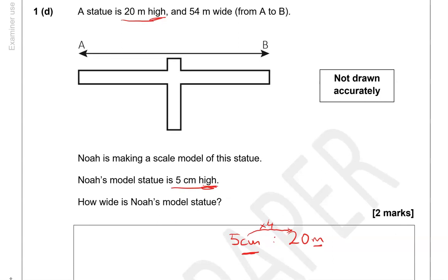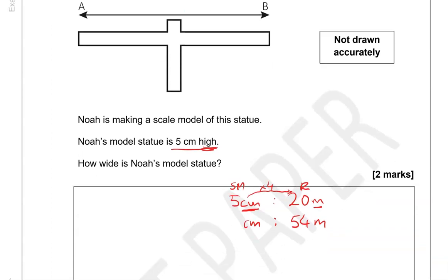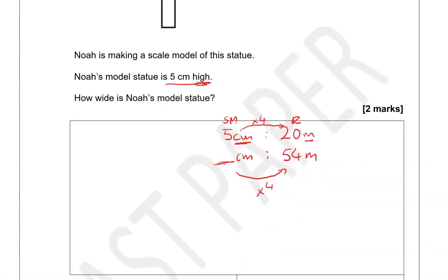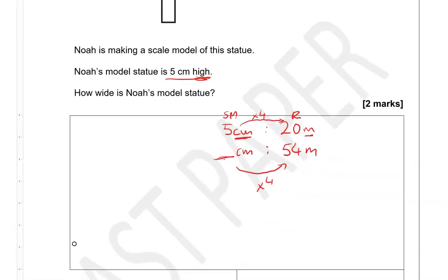So we've got the width in reality. So this was in reality, and this was the scale model. So the width is 54 meters. Now we're going to work out what's that equal to in the model. So in centimeters we'll get the answer. So don't forget, same thing, this number times 4 gives us 54. So to figure out that number, we're going to do the inverse, 54 divided by 4.